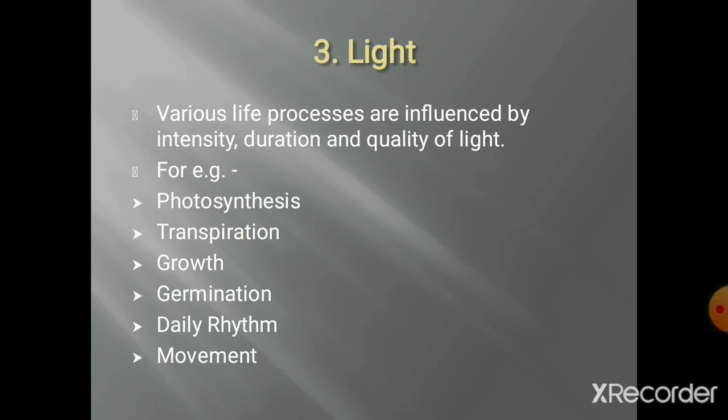The next abiotic factor responsible for the survival of organisms is light. Various life processes in plants and animals are influenced by the intensity of light, duration of light (that means availability of the light), as well as the quality of the light. For example, the processes of photosynthesis, transpiration, growth, and germination of seed are all affected by light.